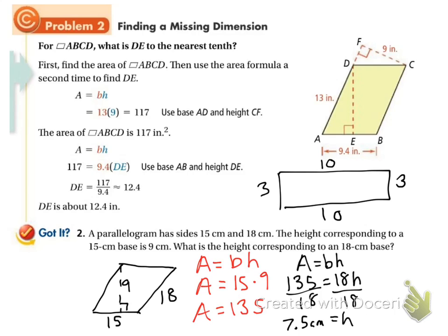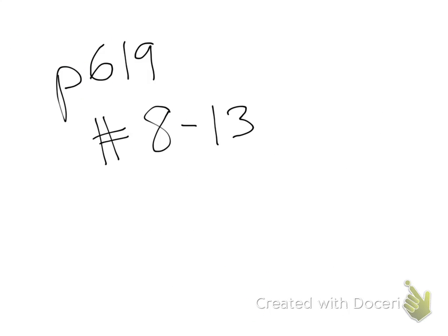So you set it up with the two numbers that you have already and the ones that go together, your base and your height that go together. Find your area. And then do the equation again, but this time using the other base. So in this case, the 18 to solve for the other height. And there's your homework.